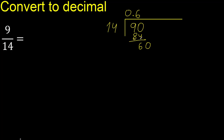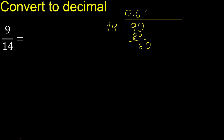The decimal point is placed here. We now have 60. 14 multiplied by 5 is greater, therefore we multiply by 4, which gives 56. We subtract and complete.